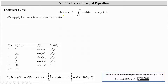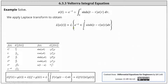Let's take a look at a specific example. We want to solve x of t equals e to the power of negative t plus the integral from zero to t of hyperbolic sine of the quantity t minus tau times x of tau d tau. Meaning we want to eliminate the integral and solve the equation for x of t. The first step is to take the Laplace transform of both sides of the equation.